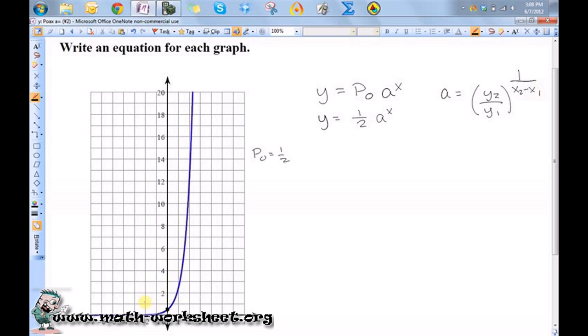I had this point here: (0, 1/2). That can be one of my points. And then another point I can see is right here, which is (1, 5/2).